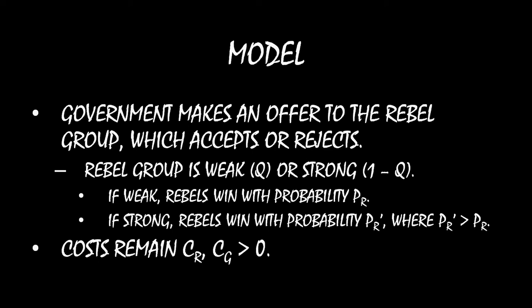To model one side being stronger than the other: with the weak rebel type, if you fight a war, you win with probability PR. But if you're strong, you win with probability PR prime, where PR prime is greater than PR. So essentially, if you're a stronger rebel, you're more likely to win the war. The costs remain the same — if you fight a war, the government pays cost CG, and the rebel group, regardless of whether it's weak or strong, pays cost CR. The key difference is that the rebel group knows whether it's weak or strong when it makes the accept-reject decision, but the government doesn't know when it makes its offer.